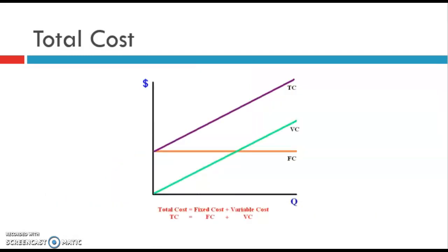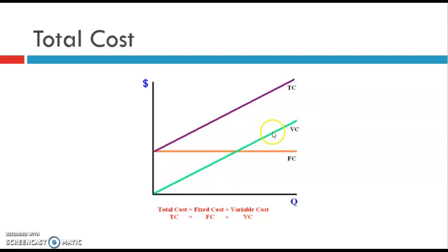So what is a total cost? A total cost will include your fixed cost — the one that stays the same — plus you're going to add the variable cost. Imagine picking up this green triangle in your mind's eye and placing it on top of the fixed cost. That gives you what we call the total cost. So the total cost is your fixed cost plus your variable cost.